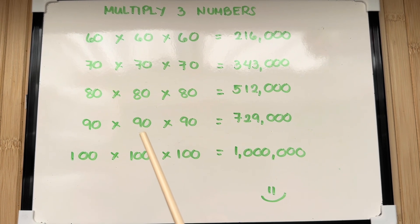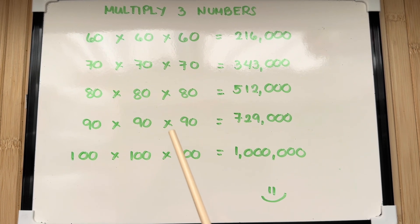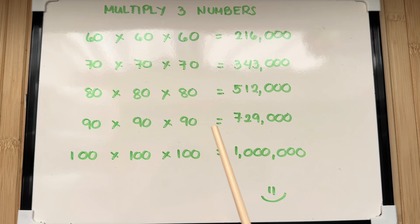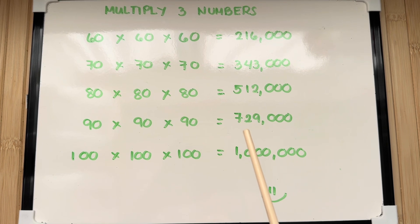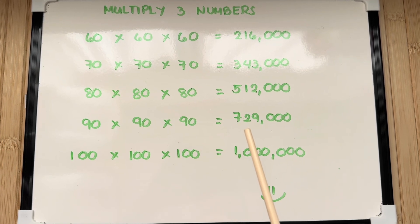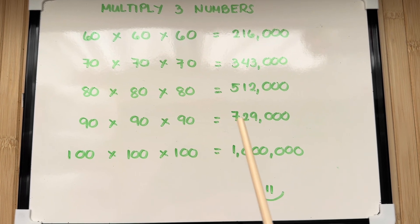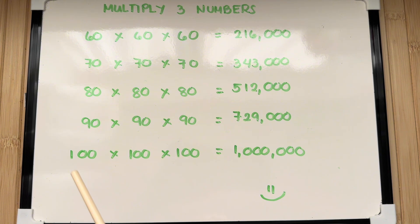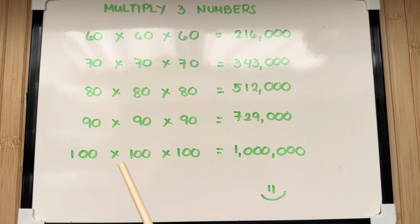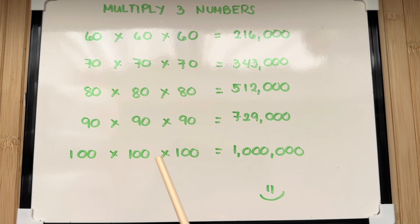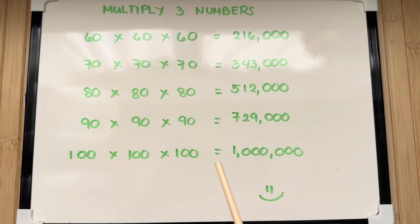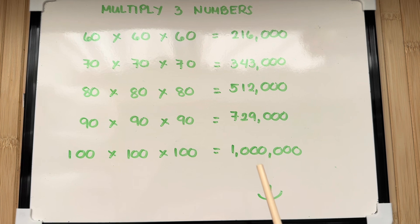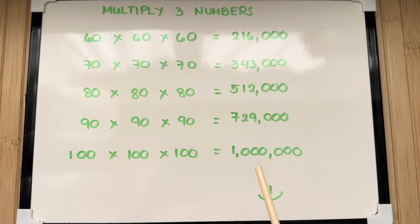90 times 90 times 90 is equals to 729,000. And lastly, 100 times 100 times 100 is equals to 1,000,000.